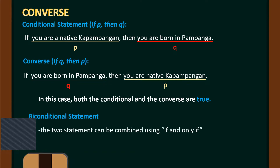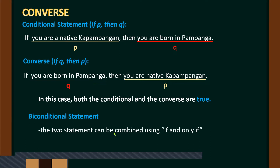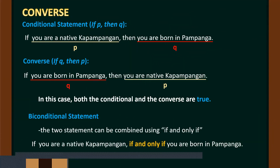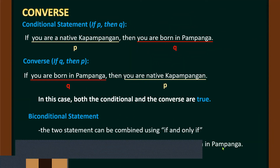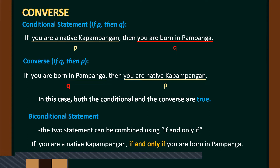We also have what is called a biconditional. The two statements can be combined using 'if and only if.' When the conditional statement and the converse are both true, they are combined using 'if and only if.' So: 'You are a native Kapampangan if and only if you are born in Pampanga.' This is the biconditional statement.